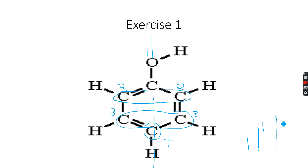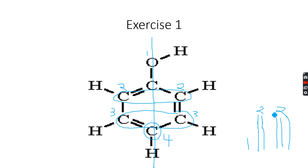So we will have a triplet like this, and this will also be integrated to two. These two peaks are for the same number of protons — two protons each — so they should be the same height. The OH peak is integrated to one, for the single proton attached there.